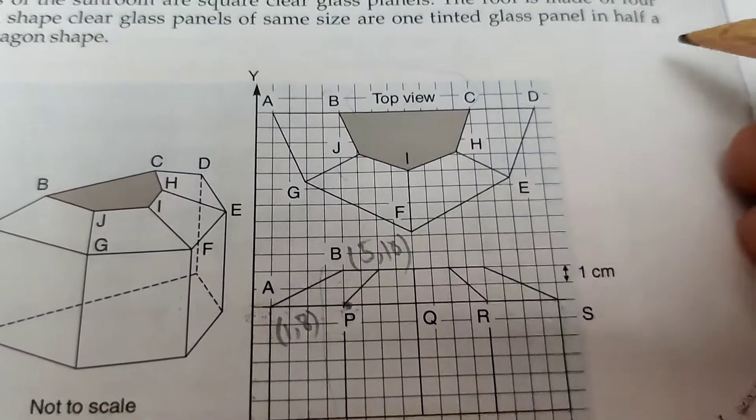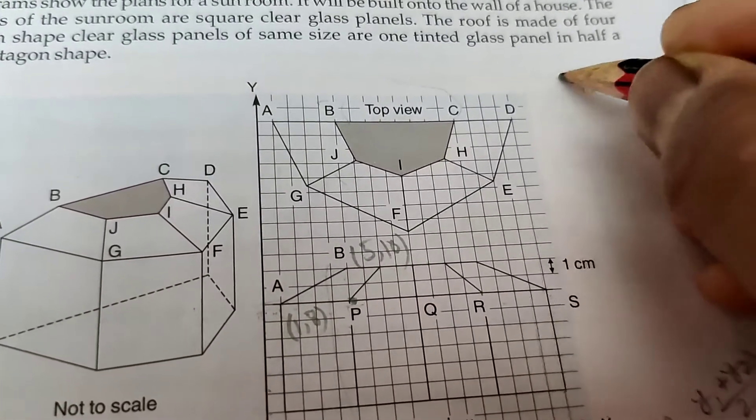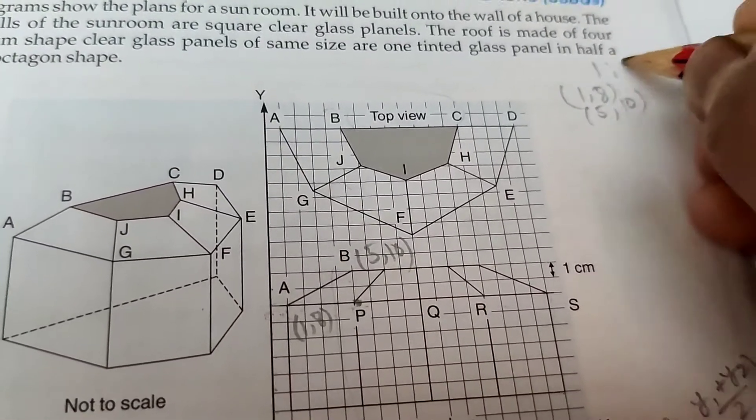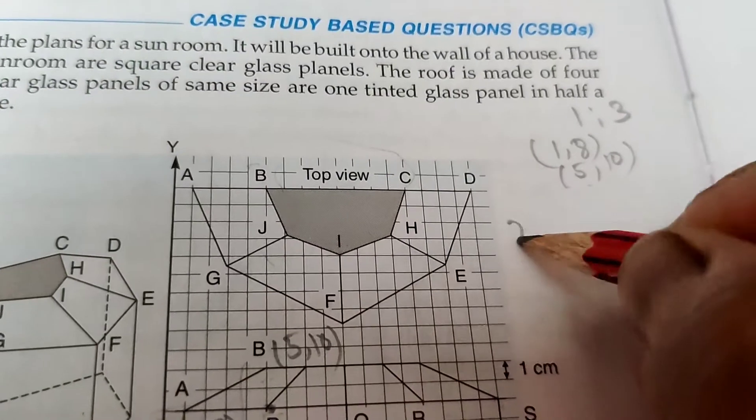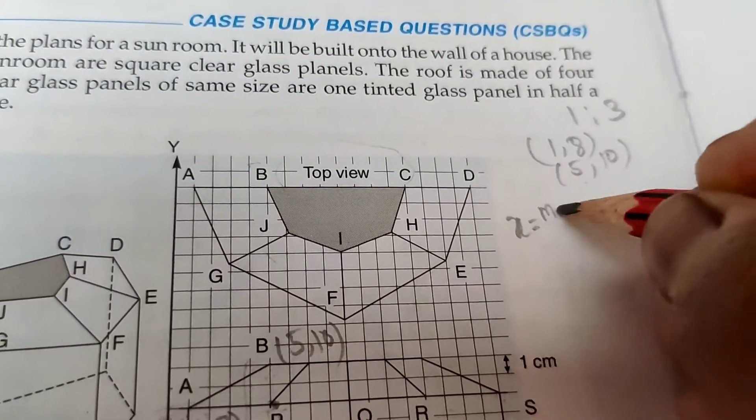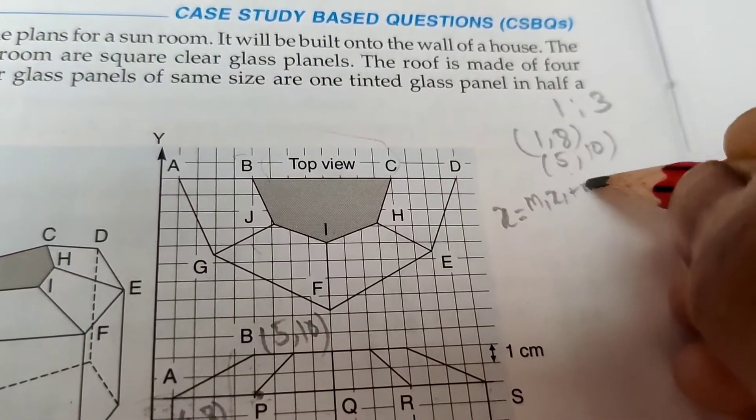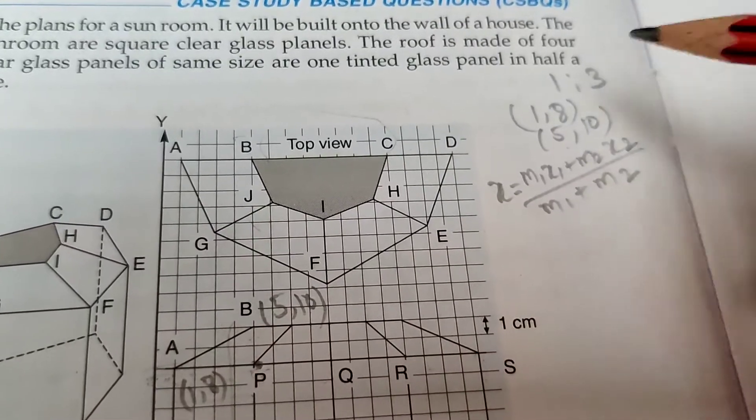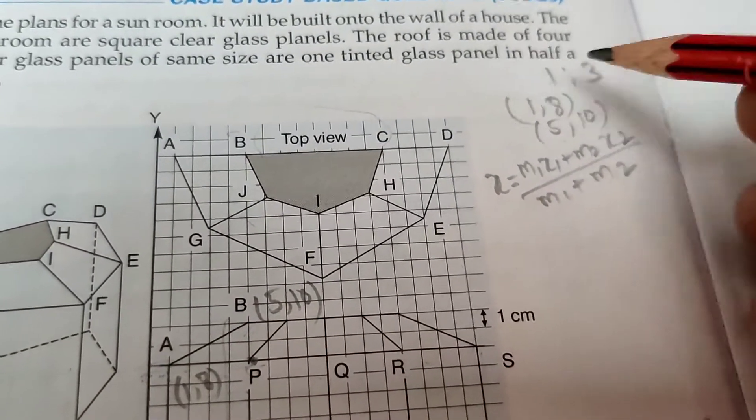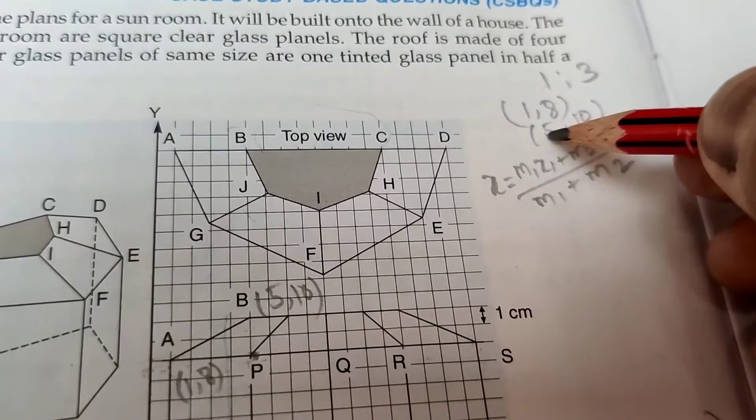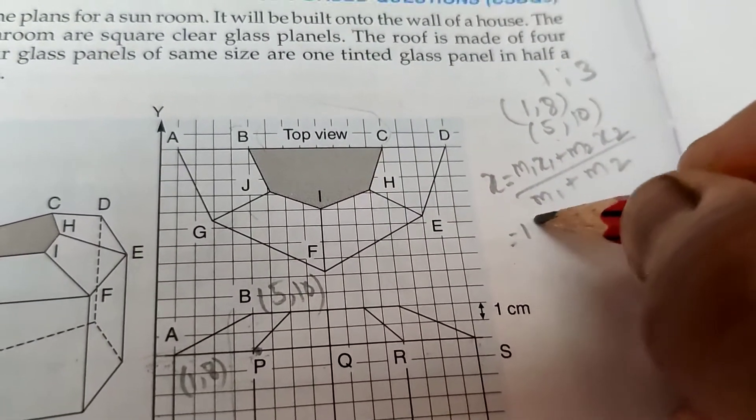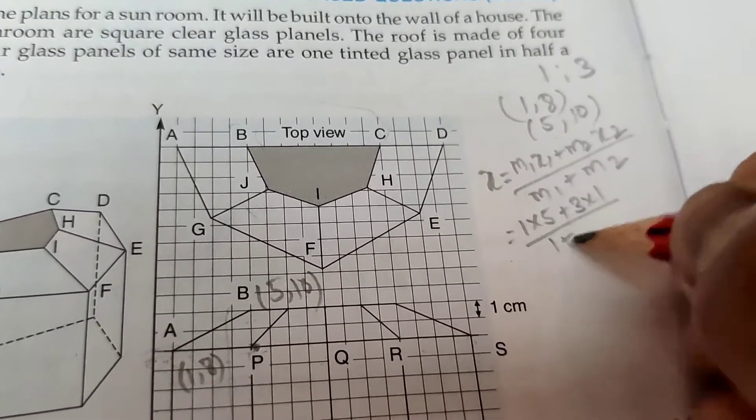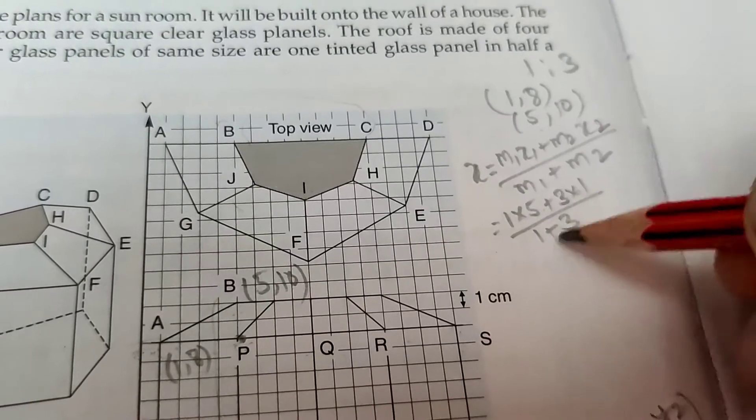By using the formula, A coordinate is (1,8), B coordinate is (5,10), and ratio is 1:3. The formula for x-axis is m1x2 plus m2x1 by m1 plus m2. m1 is 1, m2 is 3, x1 is 1, x2 is 5. Put in the formula: 1 times 5 plus 3 times 1 by 1 plus 3. 5 plus 3 is 8 by 4 is 2. The x-coordinate is 2.